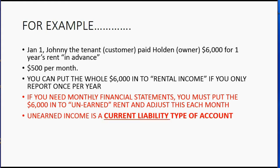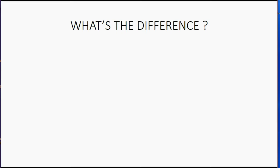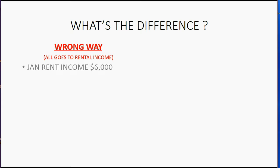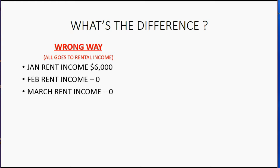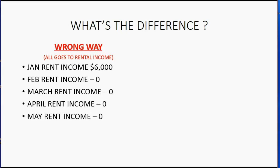You might ask: what's the difference between the two ways of recording this, and why does it matter? If you record it the wrong way — meaning it all goes into rental income — at the end of January you will report January rent income as $6,000. At the end of February, rent income will be $0. At the end of March, $0. At the end of April, $0. I think you get the point.